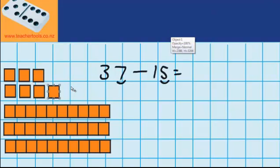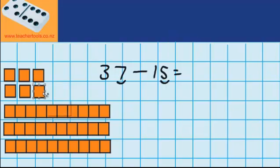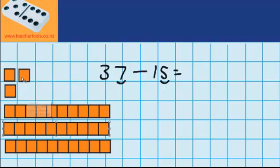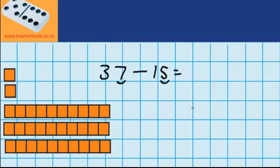So I'm coming over here and subtracting 5: 1, 2, 3, 4, and 5. And you can see that I was right — that leaves me with 2. And I could have recorded that like this: the 7 that I had, minus 5, equals 2. And you can see that over here.